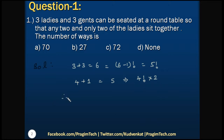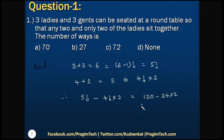Therefore, the total number of arrangements with the condition is: without restriction (5!) minus with the given condition (4! × 2). That is 120 − (24 × 2) = 120 − 48 = 72. Therefore the answer is C — with the given condition there are 72 possible ways.